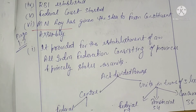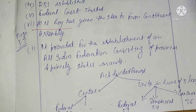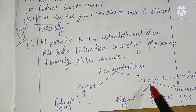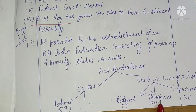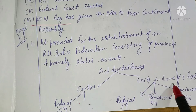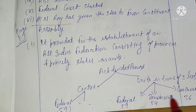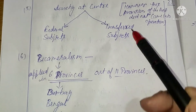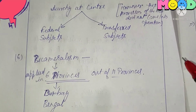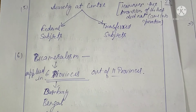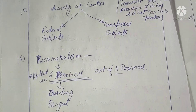The 1935 Act provided for the establishment of an All India Federation consisting of Provinces and Princely States. Regarding division of power, there were three lists: Federal List, Provincial List, and Concurrent List. At the Center, Dyarchy started — subjects were divided into federal subjects and transferred subjects, making two lists. However, this was only documented and not properly implemented on the ground level.